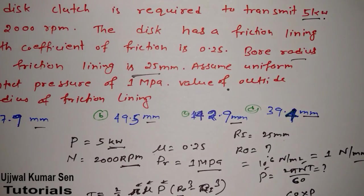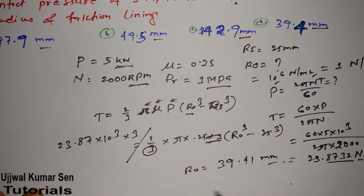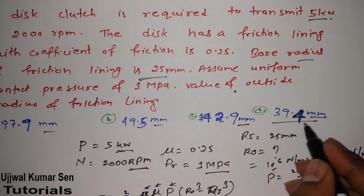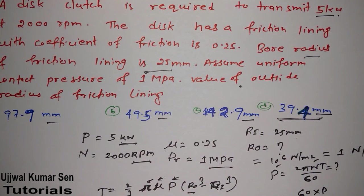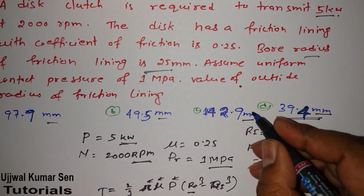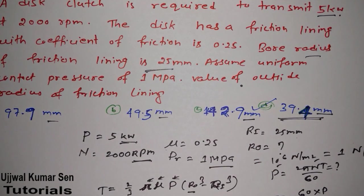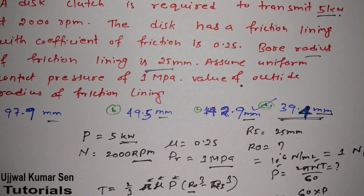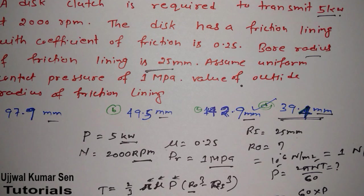Looking at the options, option D is 39.4 mm, which matches our answer of 39.41 mm. So option D is the correct answer. I hope you understood the question and the concept of disc clutch and how to solve numerical problems related to it. Thanks for watching — see you soon in my next video tutorial.